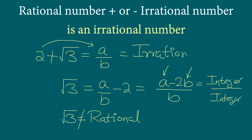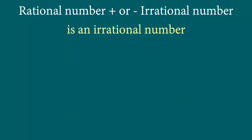This is how we prove these types of questions. Now keep in mind it could have been the other way around — we could have taken an irrational number first and a rational number later. So let's take one more example.